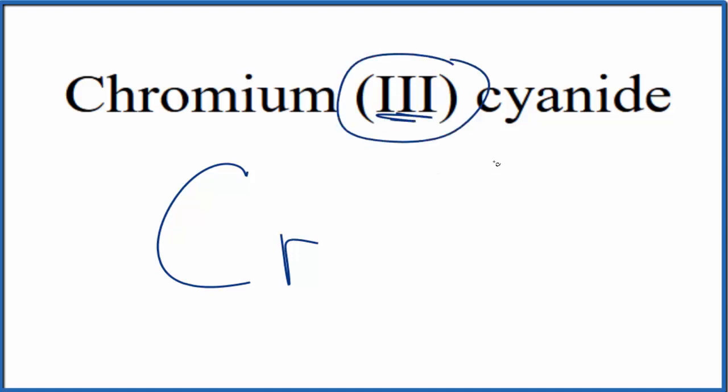In this 3, this Roman numeral 3 in parentheses here, that means the chromium is going to be 3+.